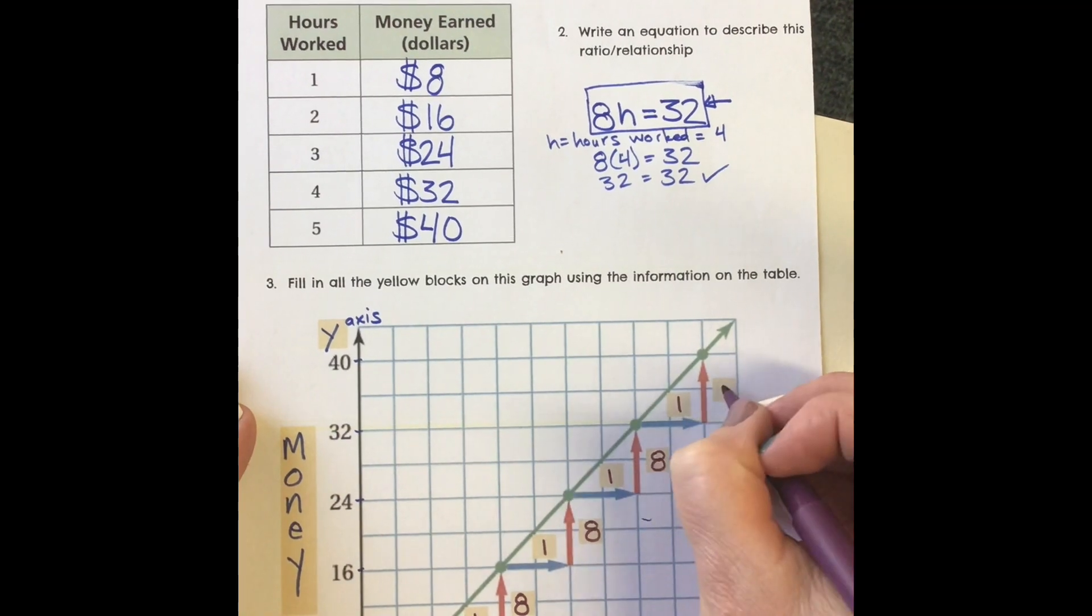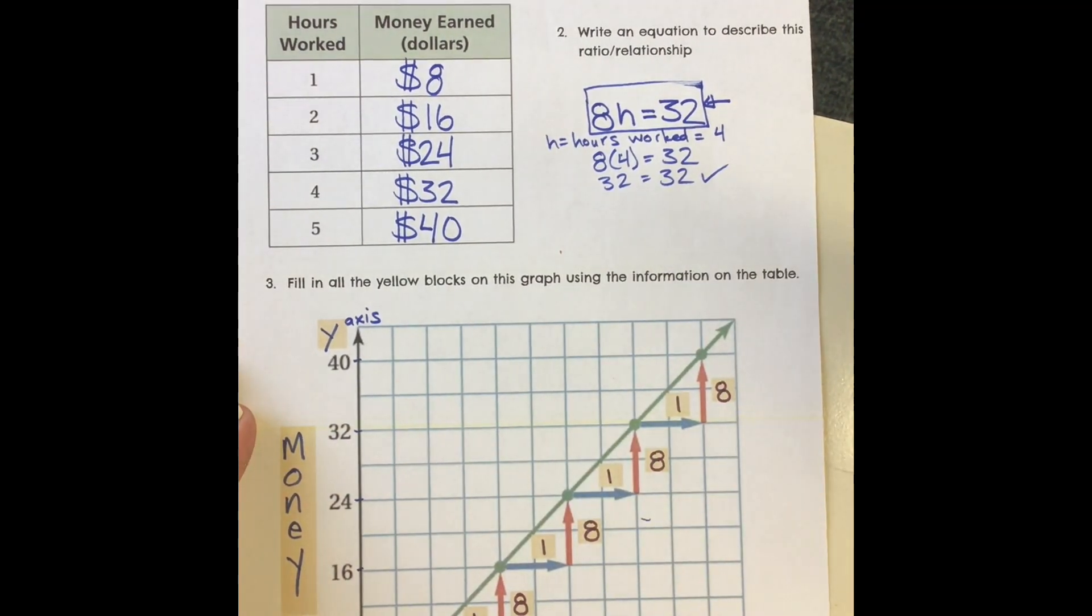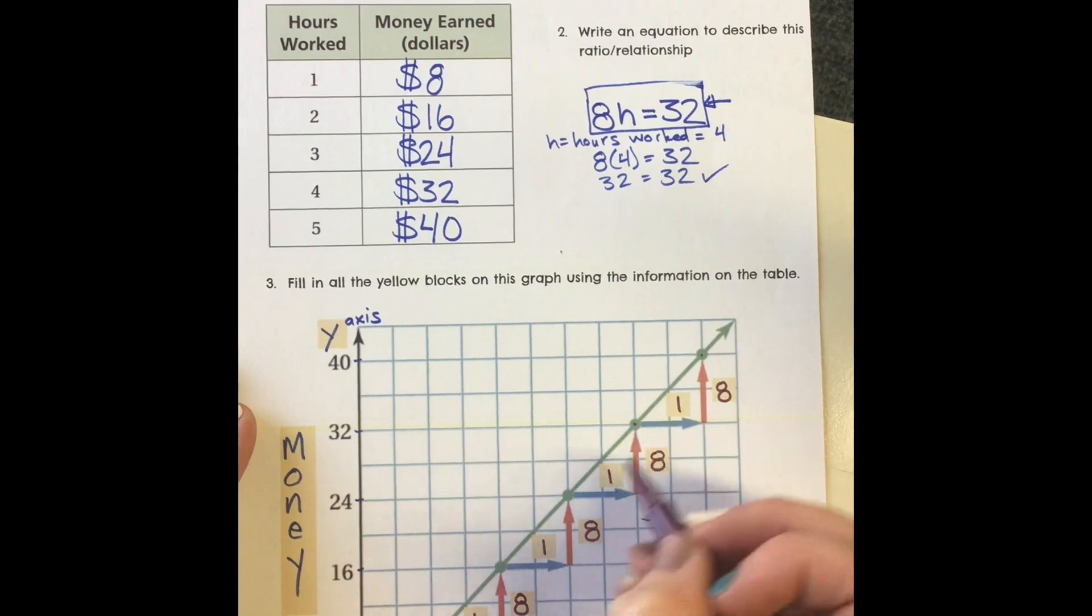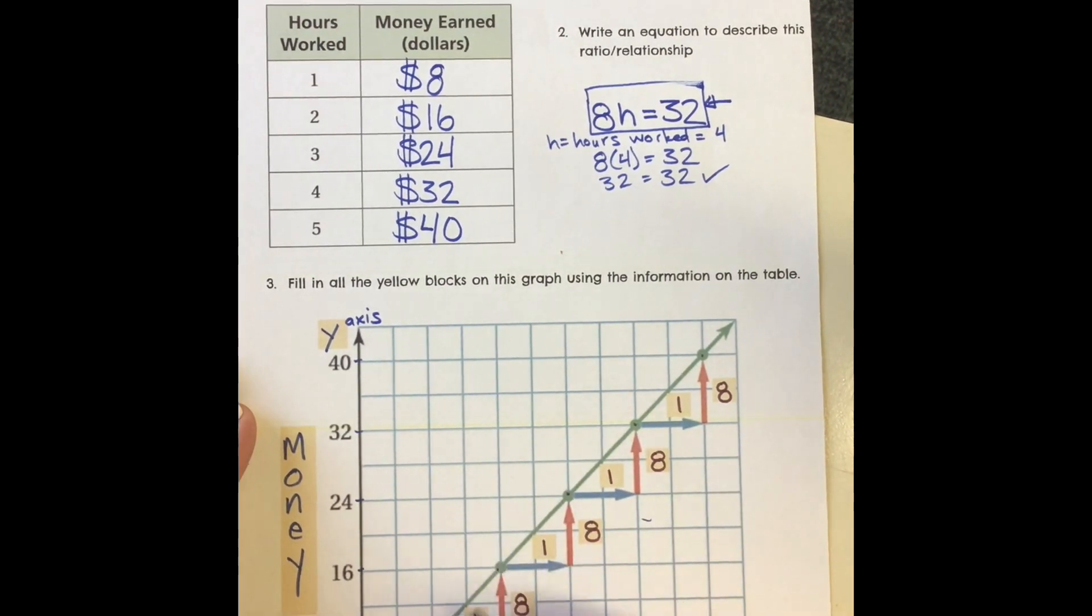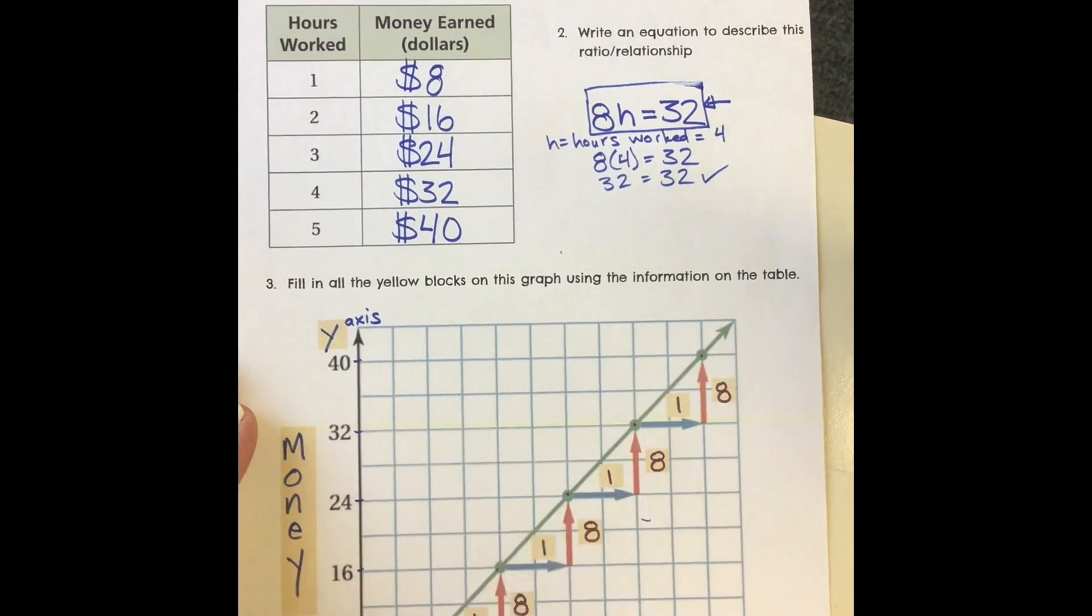1 and 8, 1 and 8. It takes me to my totals of 40, 32, 24, 16, 8, and 0. When I had done no work, I had no money. I can see there's a whole lot of information in that graph.